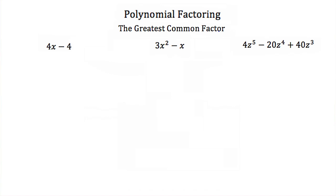Finding the greatest common factor of a polynomial is just like finding the greatest common factor of two numbers or two monomials. So here we have 4x minus 4. To find the greatest common factor of this polynomial, you have to find the greatest factor that's in all the terms of this polynomial.